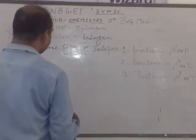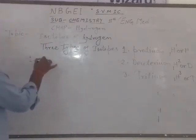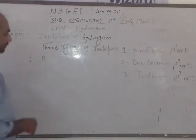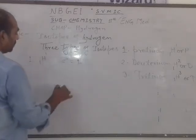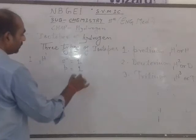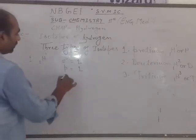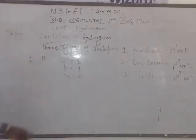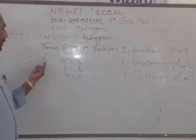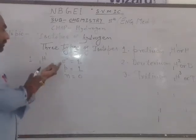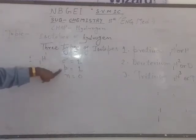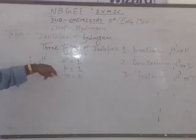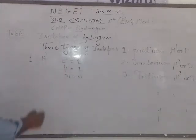First, protium — 1H1. The number of electrons in protium is 1. The number of protons in protium is 1. The number of neutrons in protium is 0. So in the first isotope of hydrogen, we have 1 electron, 1 proton, and 0 neutrons. One proton is situated in the nucleus and 1 electron revolves in the orbit of protium.